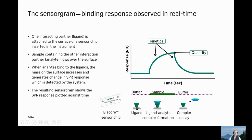The so-called sensorgram depicts the binding response observed over time. One interaction partner, called the ligand, is attached to the sensor surface. Buffers flowing over that surface give a baseline response. The sample containing the other interaction partner, the analyte, is passed over that surface, and if binding occurs, the mass on the surface increases, which is recognized by an increase in response of the SPR detection signal. The system then switches back to buffer passing over the surface, and you can observe how fast the formed complexes decay from the surface.